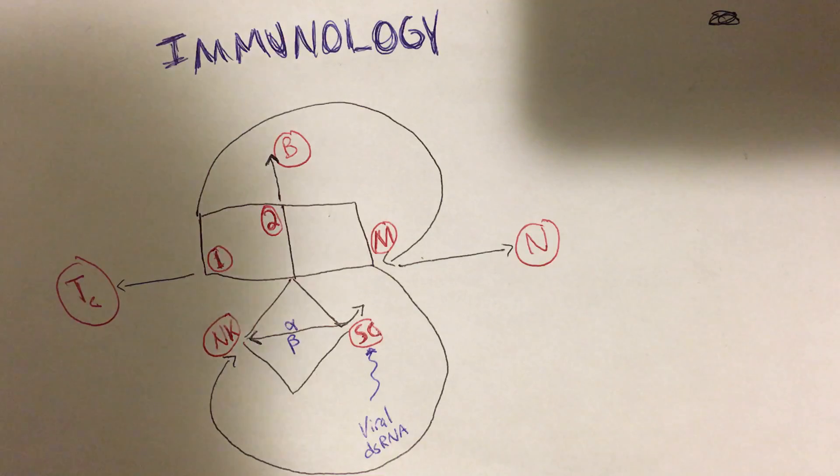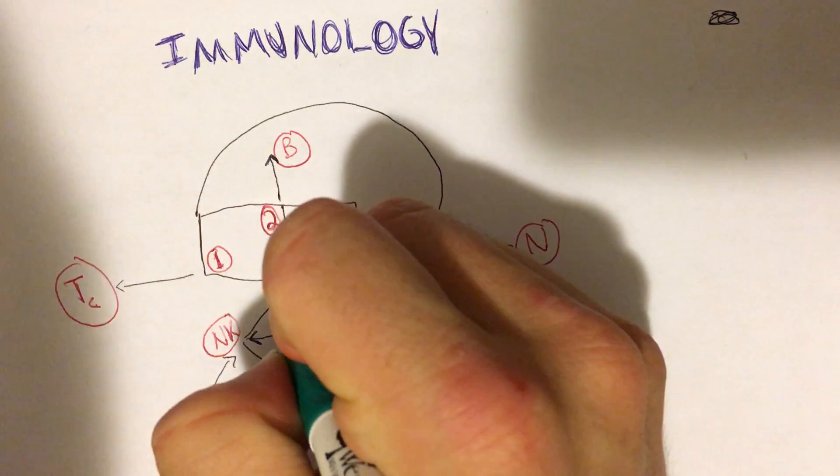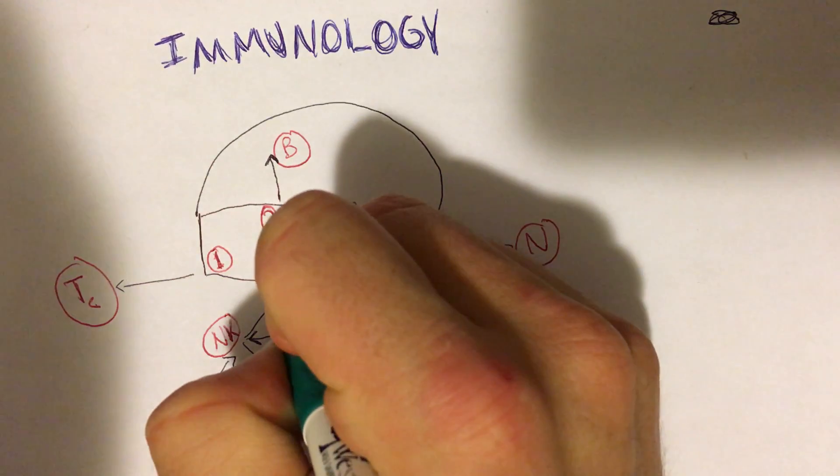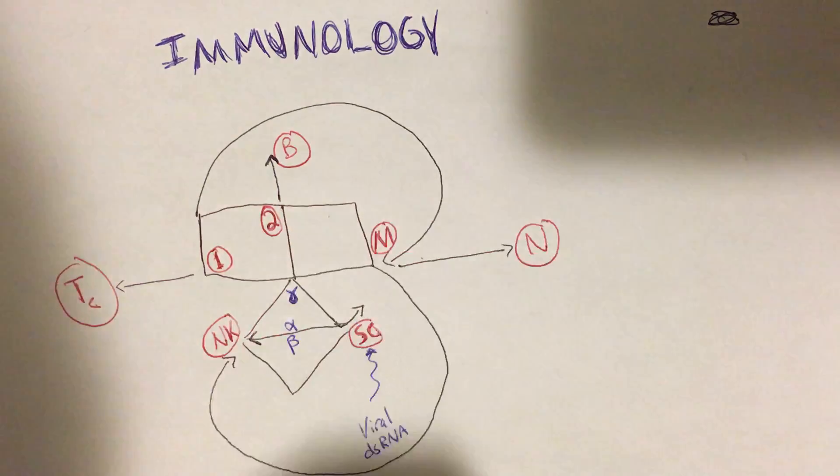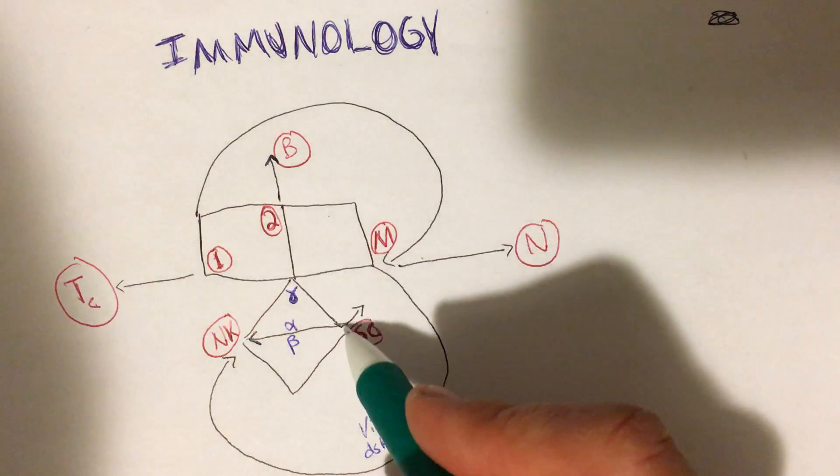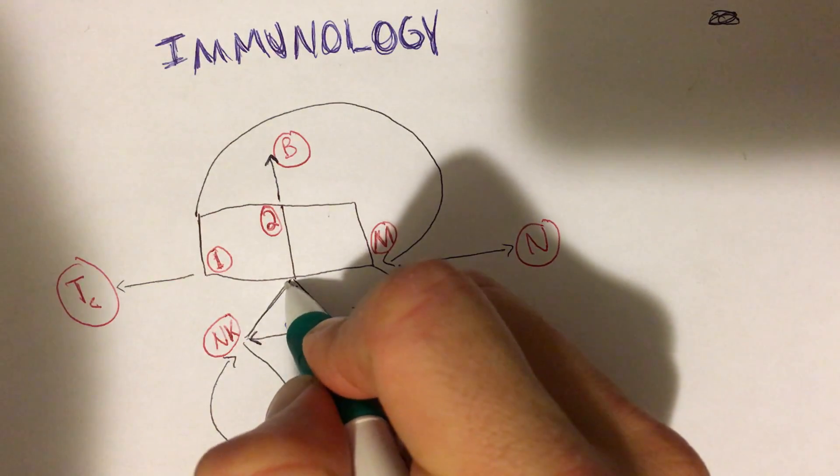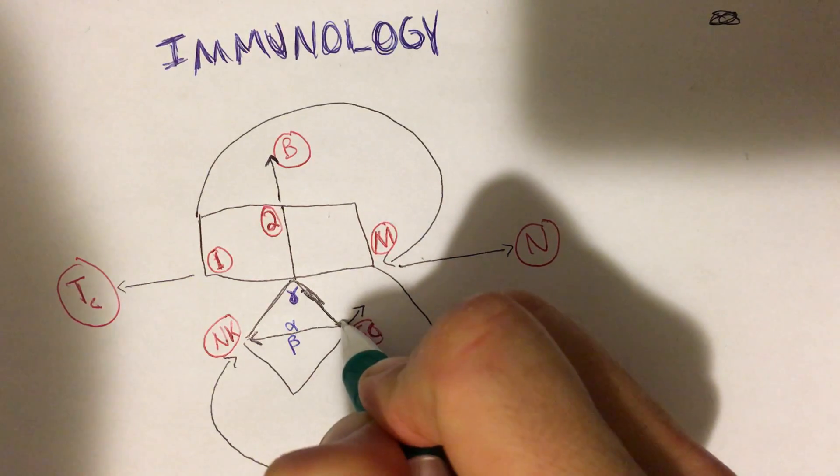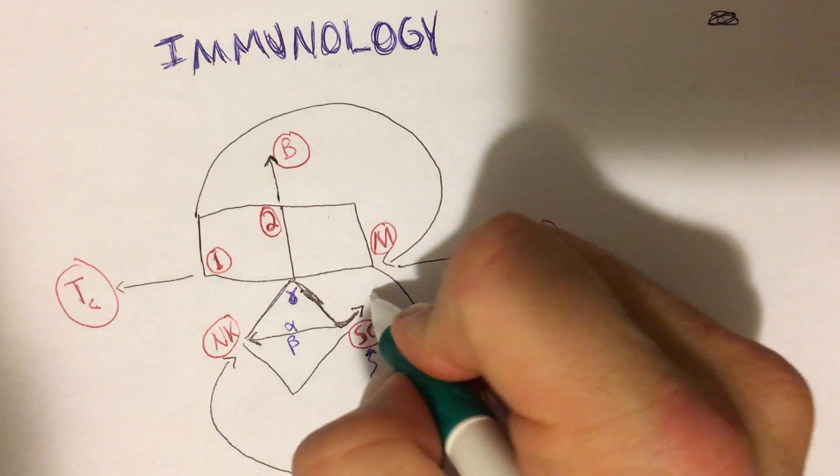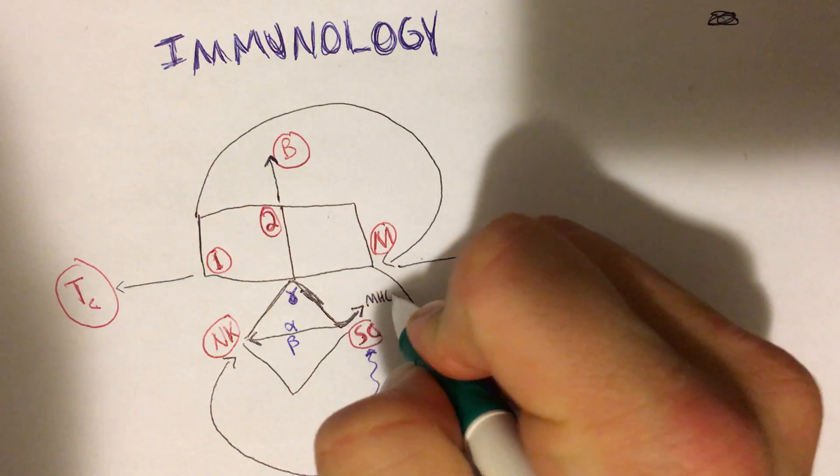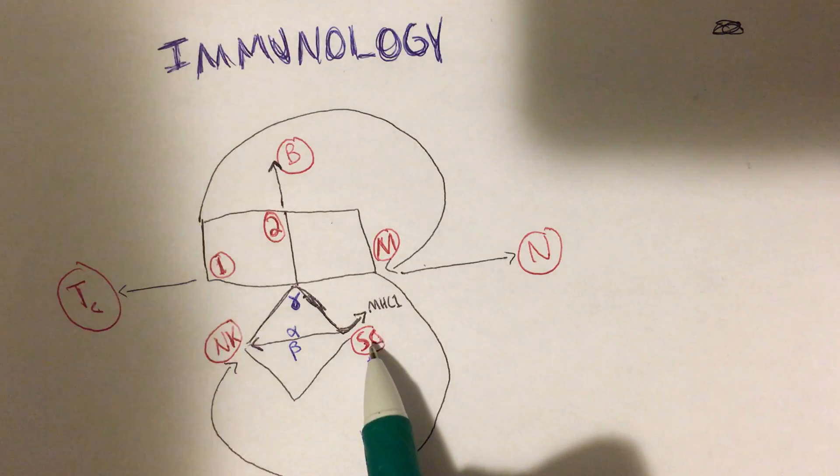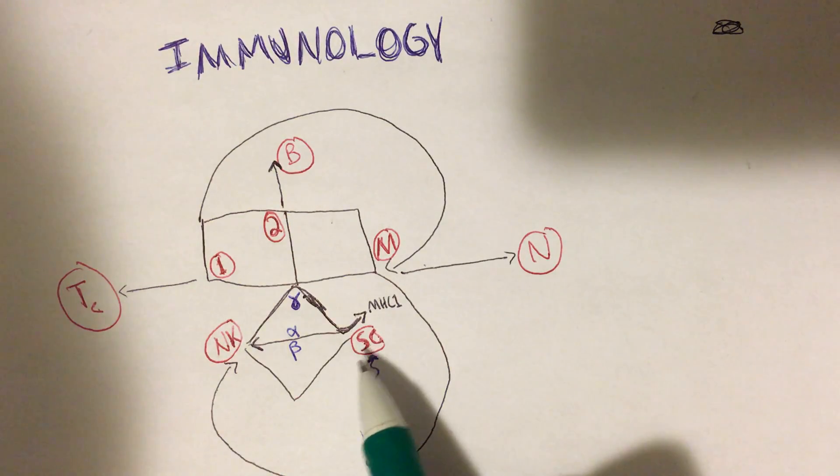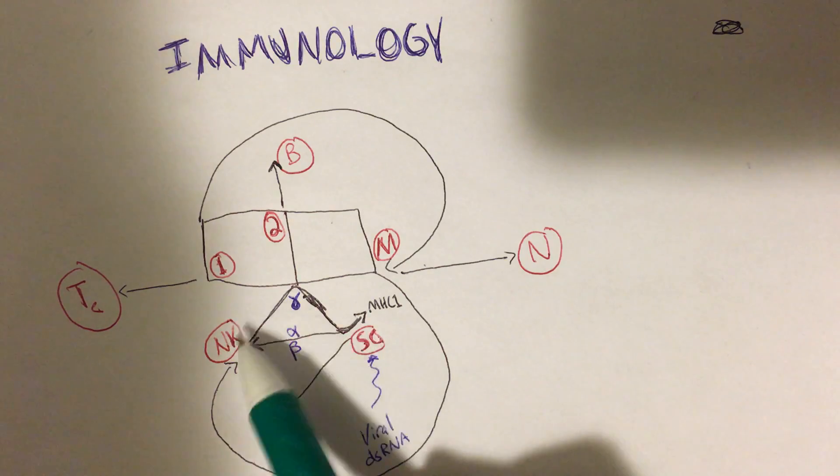And the natural killer cell in response is going to do a few things. One, it's going to kill that cell basically. The other thing it's going to do is upregulate interferon gamma, and that interferon gamma is going to reflect back on the cell here. It's going to go, hey, you are infected, have some interferon gamma. And this is why that mustache was important - it's going to tell this cell to upregulate MHC1.